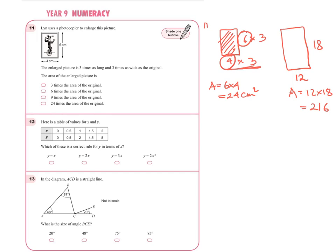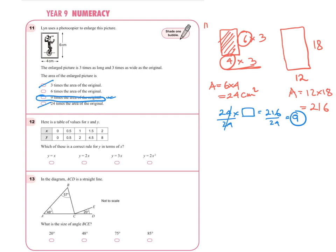To find how many times the area has been enlarged, we need: twenty-four times a number equals two hundred and sixteen. Dividing both sides by twenty-four gives us nine. Therefore the area of the enlarged picture is nine times the area of the original. That is the correct answer.